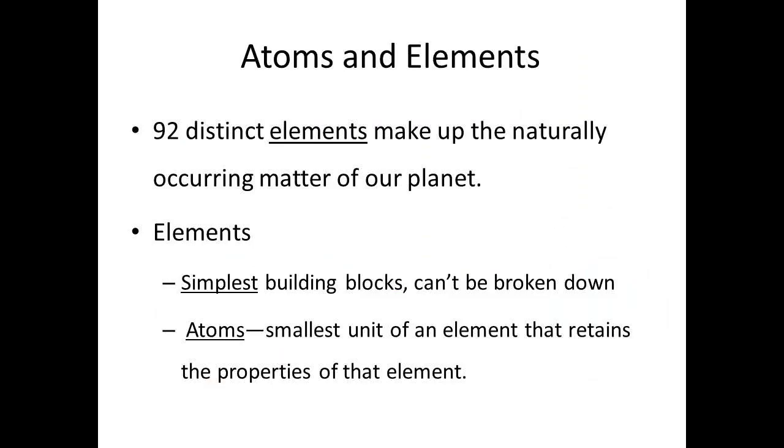This matter is made of elements. There are 92 naturally occurring elements making up the matter of our planet. We can think of elements as the building blocks of matter. They are the simplest, purest forms of matter, as they cannot be broken down into anything simpler through chemical reactions.